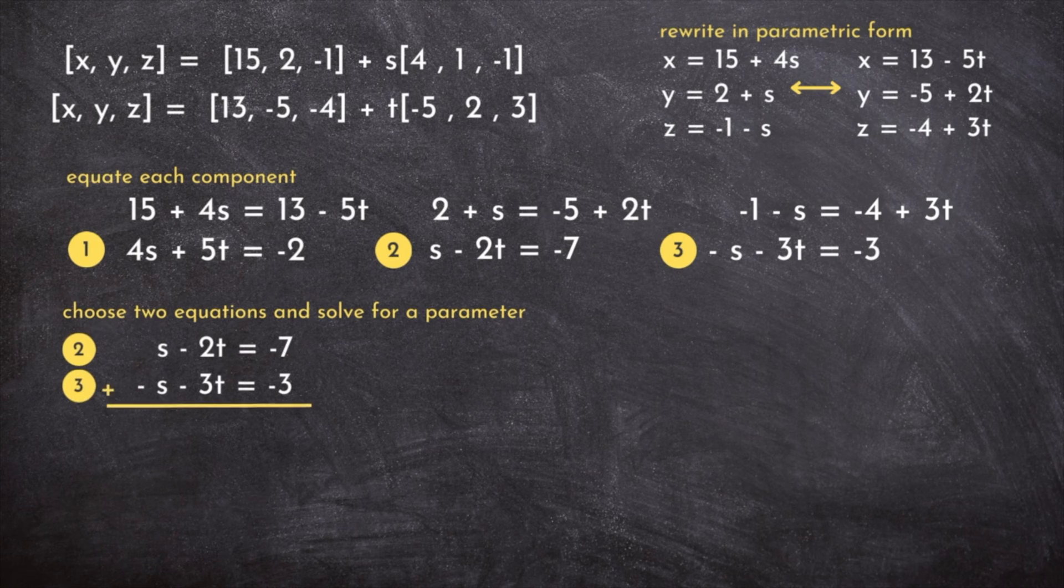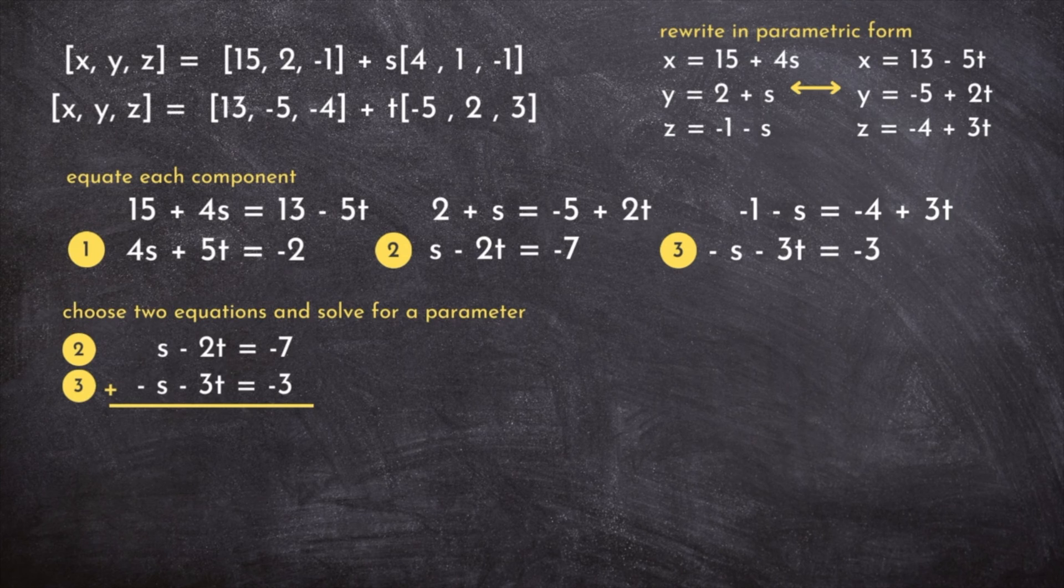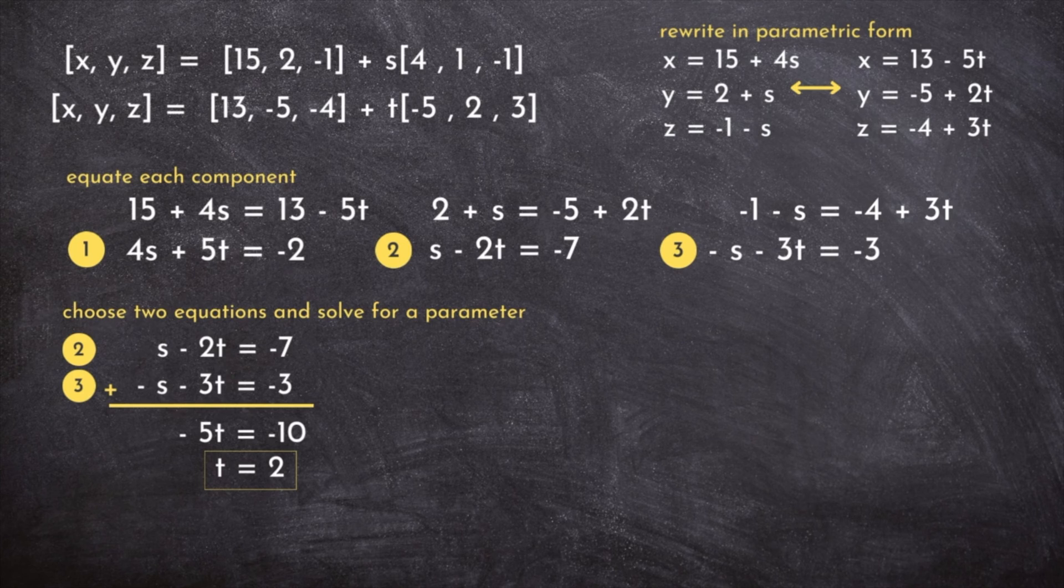This allows me to solve the system using elimination. Adding straight down cancels the s's out and allows me to solve for t, which in this case is t equals 2.